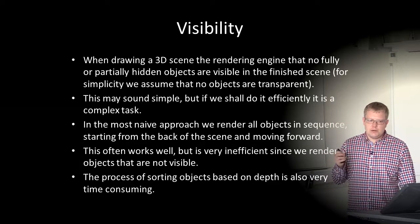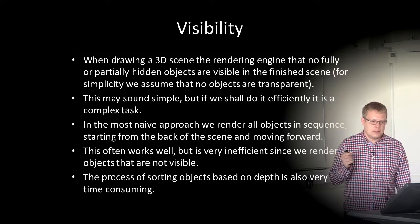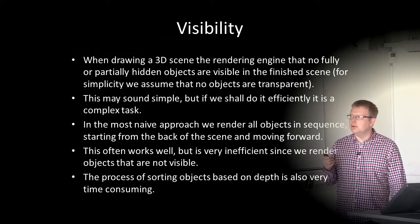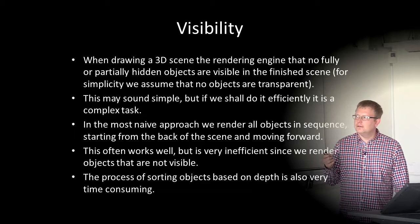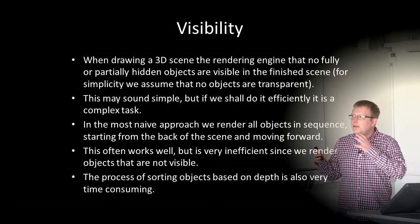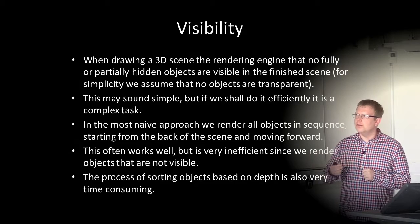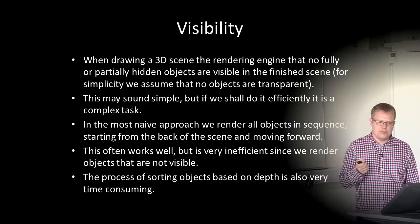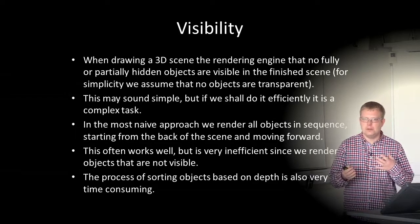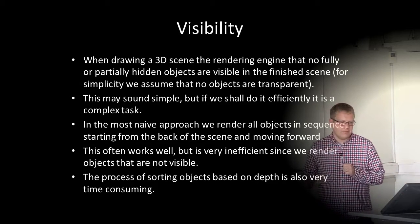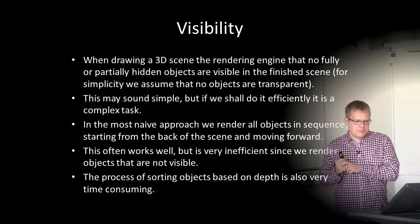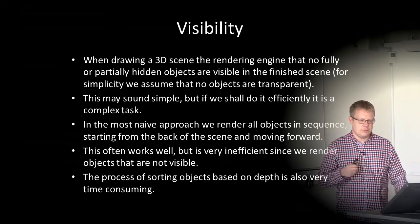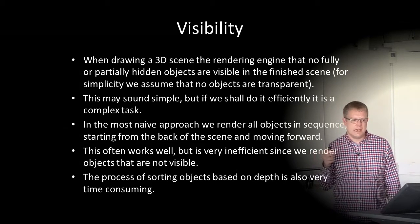When drawing a 3D scene, the rendering engine must ensure that no fully or partially hidden objects are visible in the finished scene. If something is hidden from the camera, we don't want to render it. For simplicity, we assume no objects are transparent — if we have transparent objects, we will of course see something behind them. This may sound simple, but doing it efficiently is a complex task: which objects are visible and which are not from the current camera point?